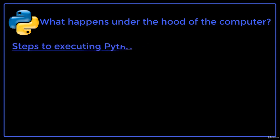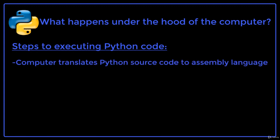The code that we write has to be converted multiple times before the computer can understand it. When we write a program in Python, for example, the computer does several things. First it translates the Python source code into assembly language.